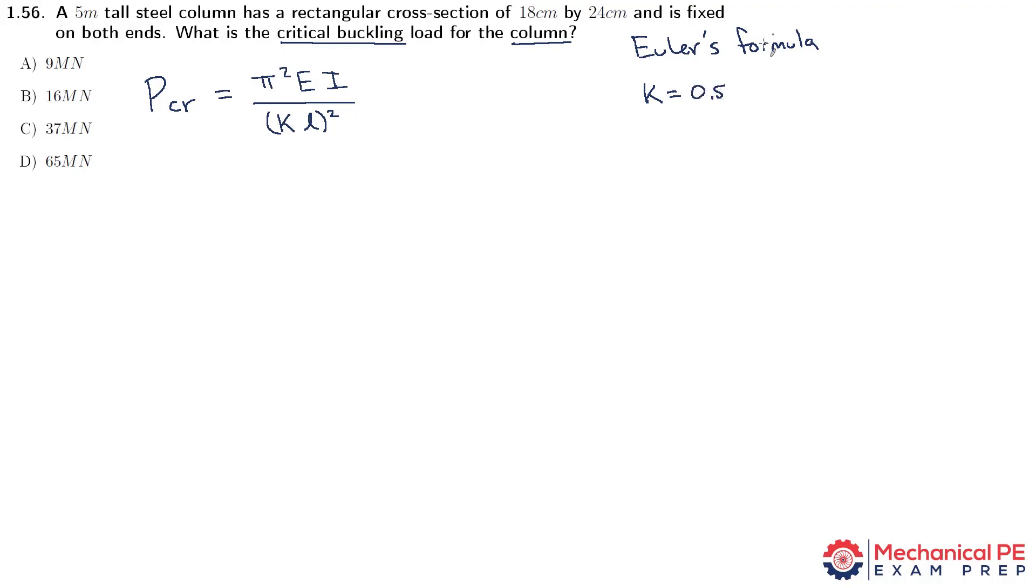If you're pinned on both ends, or fixed on one end and pinned on the other, or free on one end, there's a whole bunch of different permutations there and different corresponding k values. L is simply the unbraced length of the column. In that case, that's going to be the full 5 meters. So we're good on k, we're good on L, we know we can look up E.